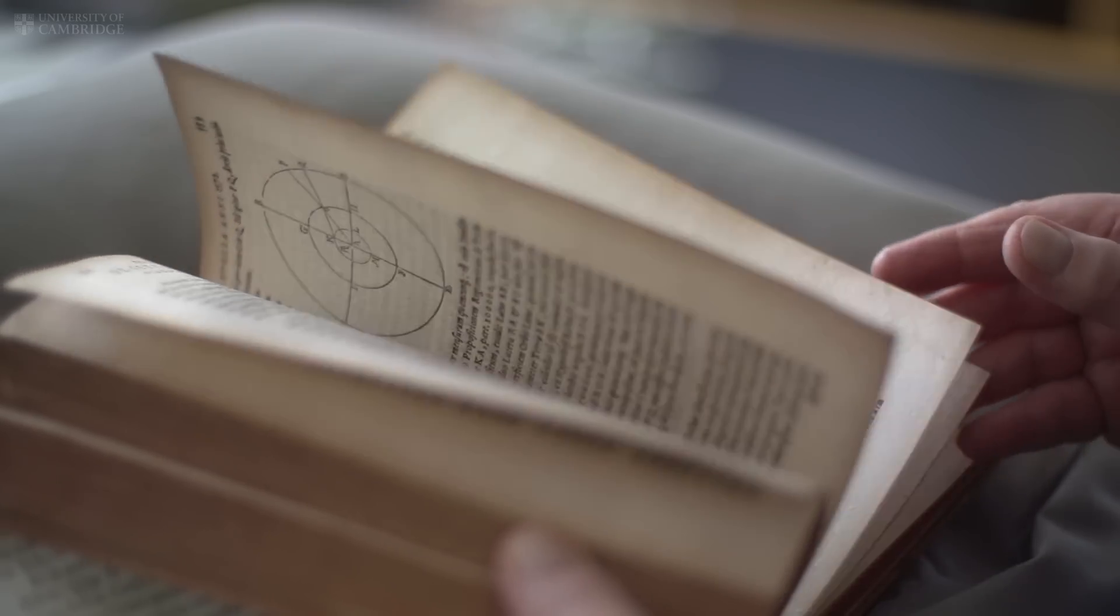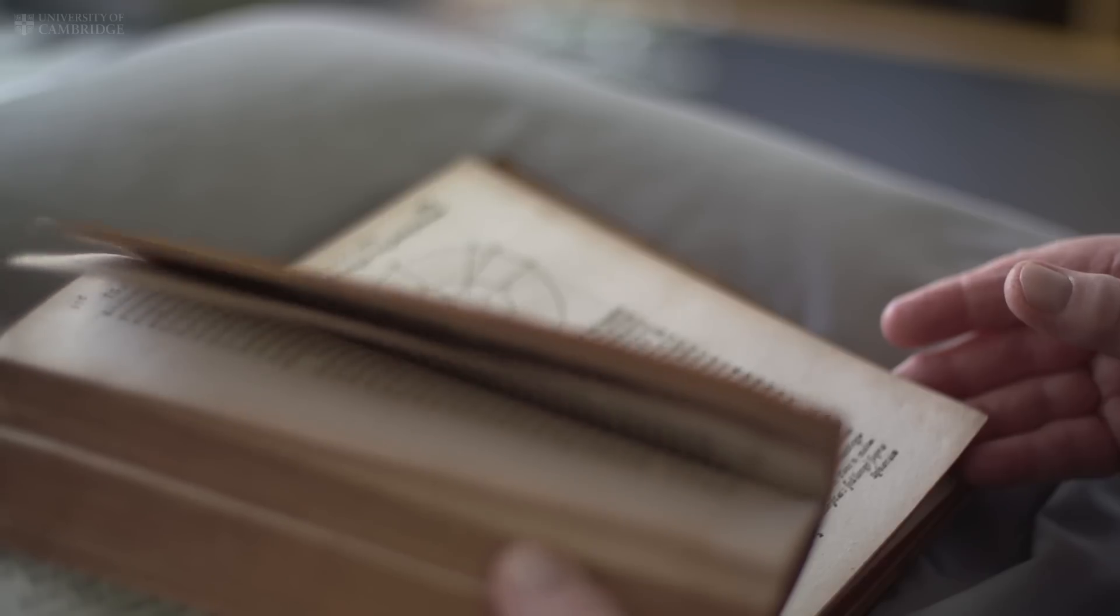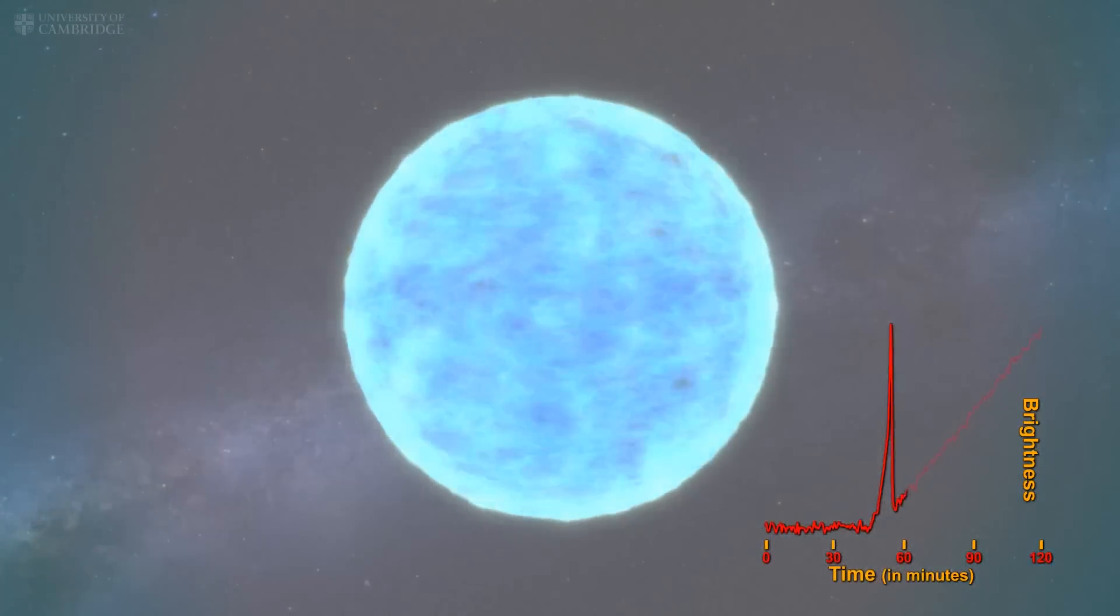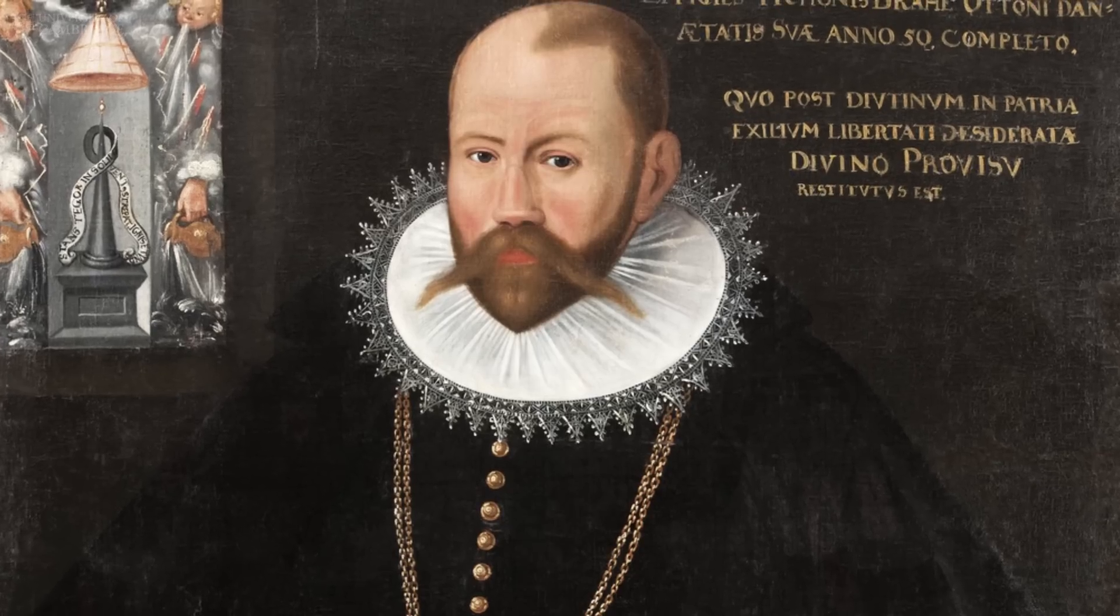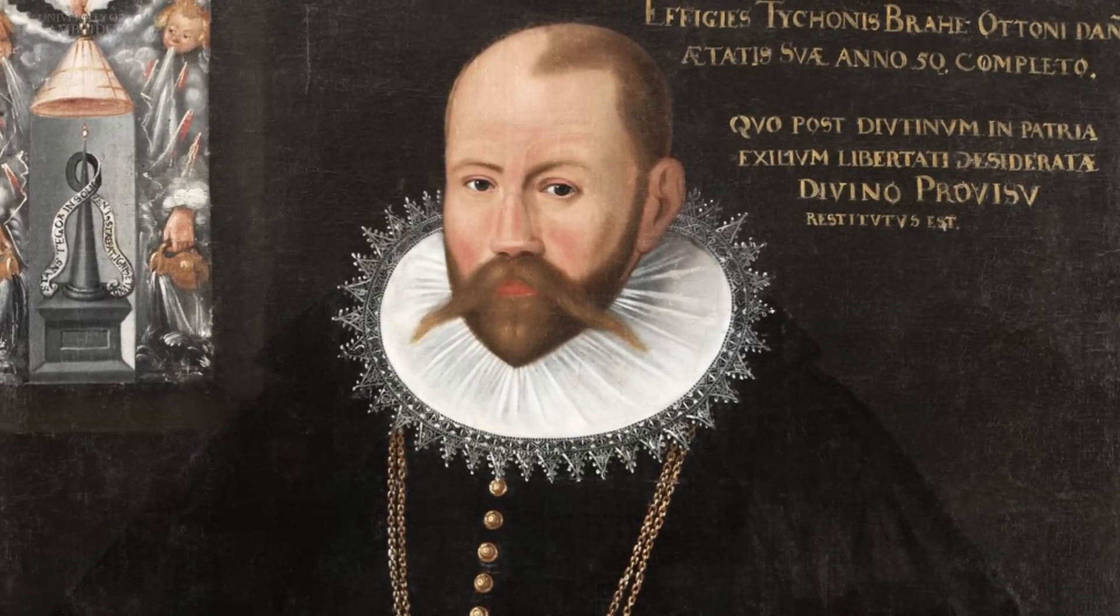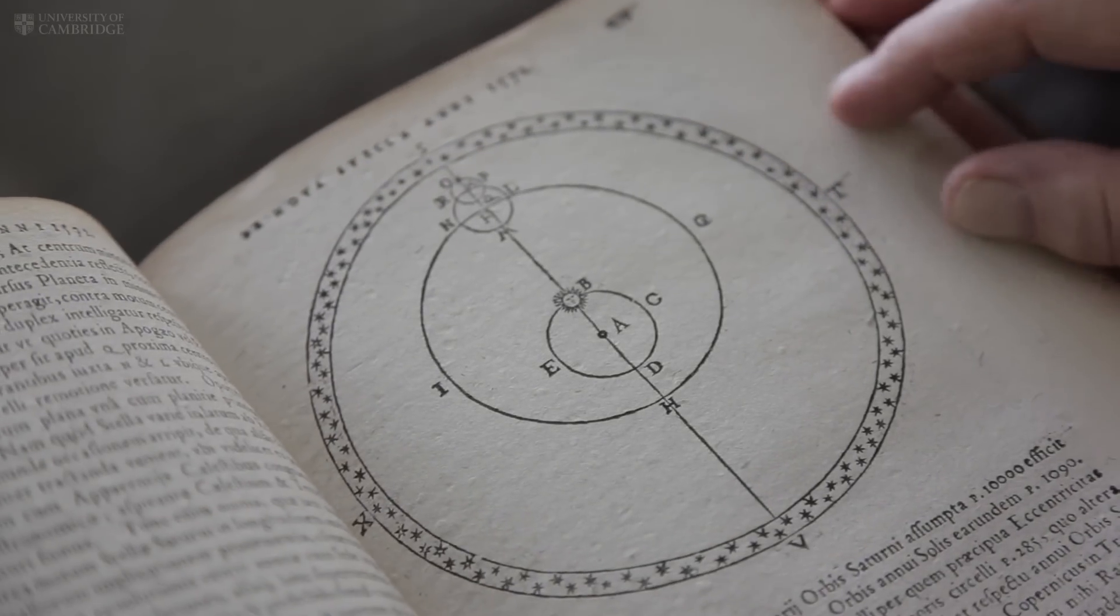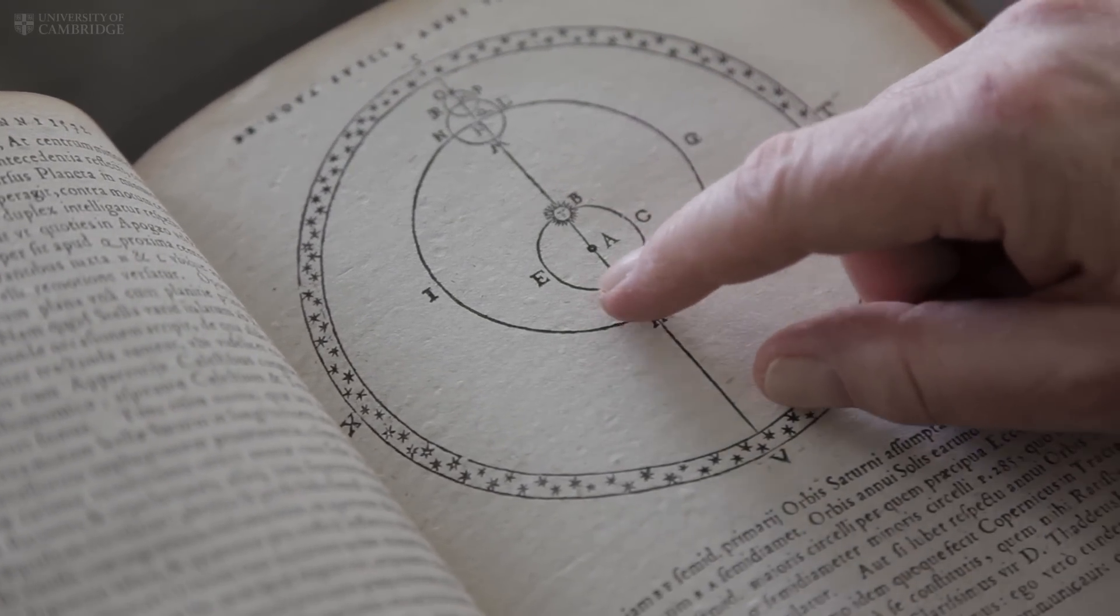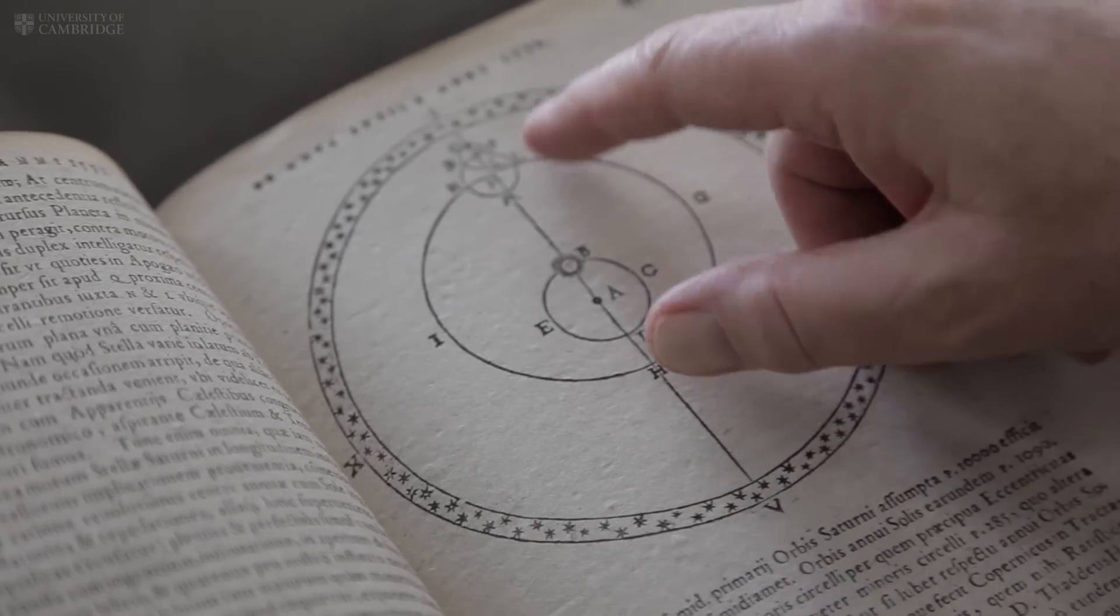We have here Tycho Brahe's De Nova Stella. It was written about a new star, a nova, a very bright star that exploded in the constellation Cassiopeia in 1572. So we're talking about 30 years after Copernicus's time. Tycho Brahe had his own ideas about the arrangement of the solar system. And the diagram here shows his arrangement and he wanted to keep the Earth at the centre of the solar system.